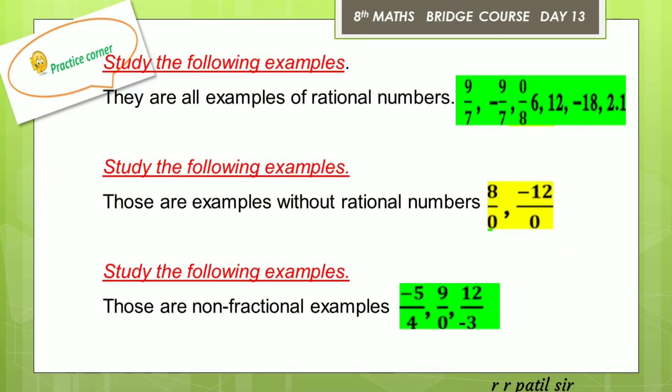Study the following examples of rational numbers: 9 upon 7, minus 9 upon 7, 0 upon 8, 6, 12, minus 18, and 2.1 — these are all examples of rational numbers. Now study examples that are not rational numbers. These numbers are not rational numbers because their denominator is 0.